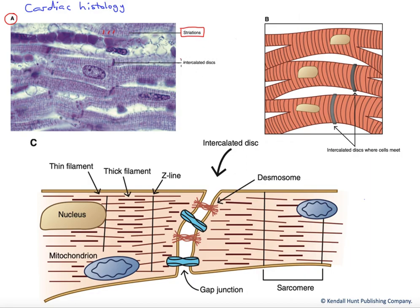We also see intercalated discs. These are these darker bands, found between cells, where cells butt up against one another. It's where we'll find a series of junctional proteins that link these cells together. We also see individual nuclei for these cells. This cardiac muscle is single nucleated.